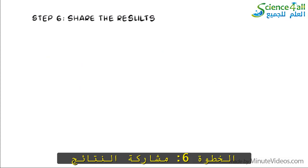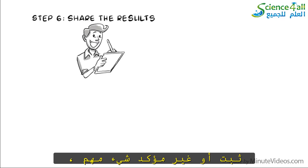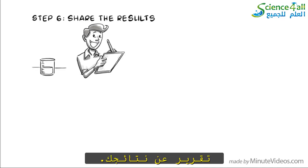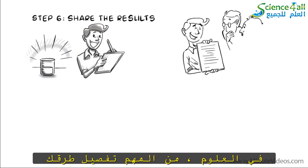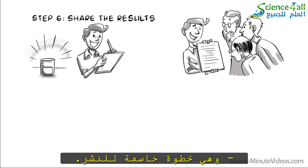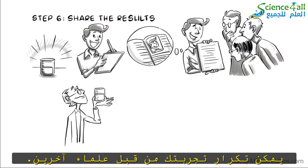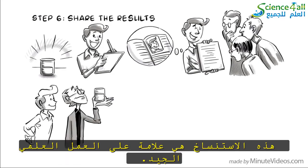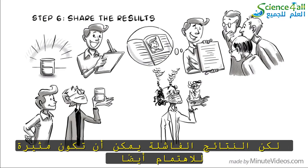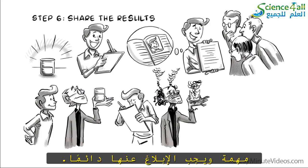Step 6: Share the results. When you are satisfied that you have proven or disproven something important, report your results. In science, it is important to detail your methods so that your peers can review your work, which is a critical step to getting published. If your results are solid, your experiment can be repeated by other scientists. Such reproducibility is a sign of good scientific work. But failed results can also be interesting — an incorrect prediction could prove to be important and should always be reported.